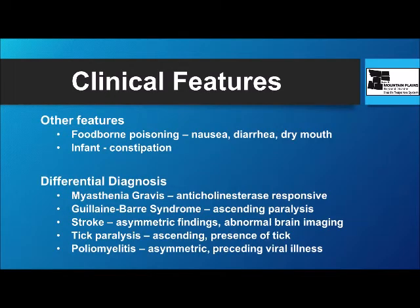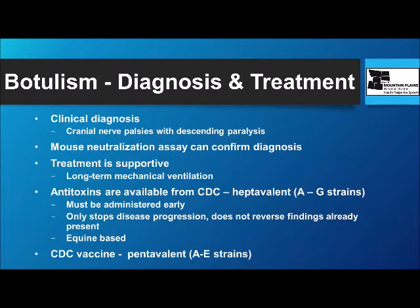Botulism does occur as a naturally occurring disease — poor food preparation and poor food canning cause it, and we see that not infrequently. The differential diagnosis includes a number of diseases that cause muscle weakness, but all should be differentiable based on the type of progression and associated findings. Botulism is a clinical diagnosis — you're looking for cranial nerve palsies and a descending paralysis. There are ways to confirm the diagnosis, including a mouse neutralization assay in which a sample of the patient's blood is injected into a mouse to see if it becomes weak or paralyzed. This takes time, so the diagnosis has to be made clinically.